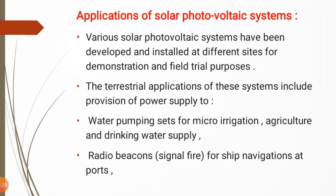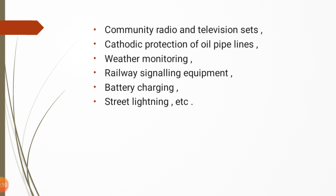Terrestrial applications include water pumping for agriculture, micro irrigation, and drinking water supply; radio beacons or signal fires for ship navigation at ports; and community radio and television sets — meaning electricity obtained from the photovoltaic system is used to operate radios and televisions.